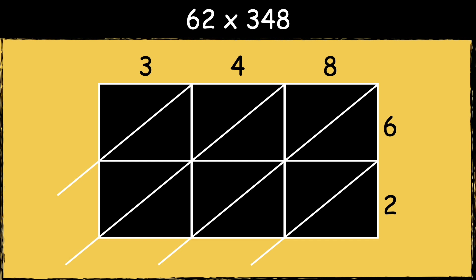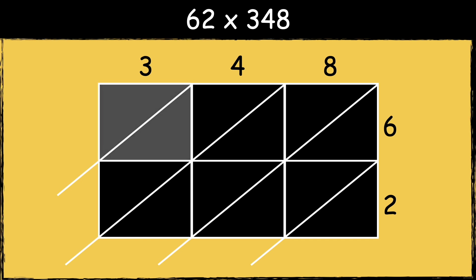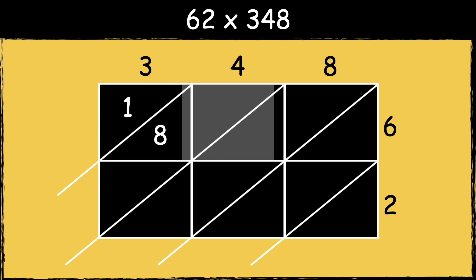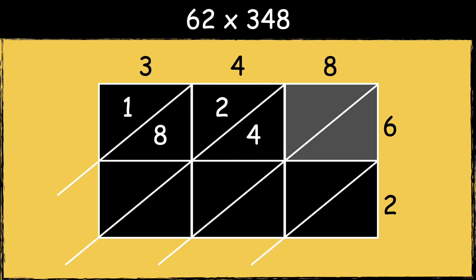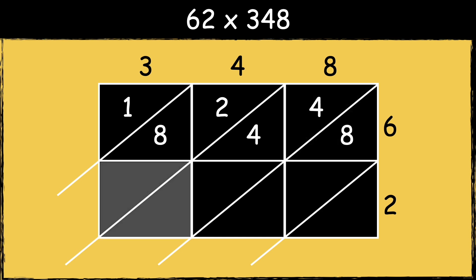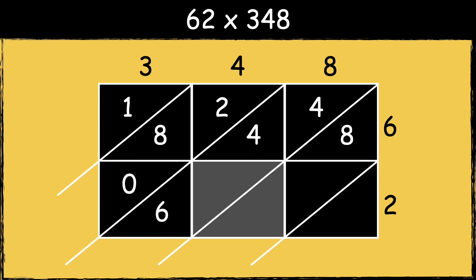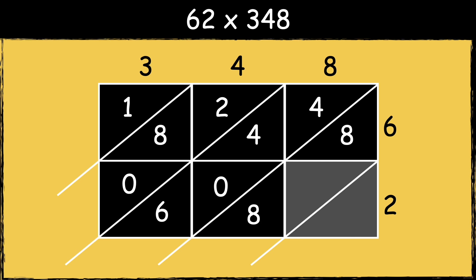Now we are ready to multiply. 3 times 6 is 18. 4 times 6 is 24. 8 times 6 is 48. Then we do 3 times 2 which is 6. 4 times 2 is 8. And 8 times 2 is 16.